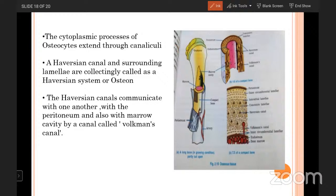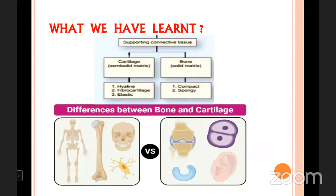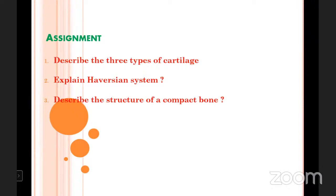Today we discussed the skeletal connective tissue — cartilage and bone. In cartilage: hyaline, fibrocartilage, and elastic. In bone: compact and spongy. Assignment: First, describe the three types of cartilage. Second, explain the Haversian system. Third, describe the structure of a compact bone.